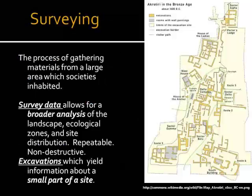When archaeologists first look at a site, they'll survey. Surveying is basically a process that allows for a broad analysis of the landscape, the ecological zones, as well as the overall site distribution. The key factor with surveying — and the thing that differentiates it from an excavation — is that it's repeatable. Many archaeologists can keep going out and surveying a particular site, and it's not going to destroy any of the knowledge or resources.